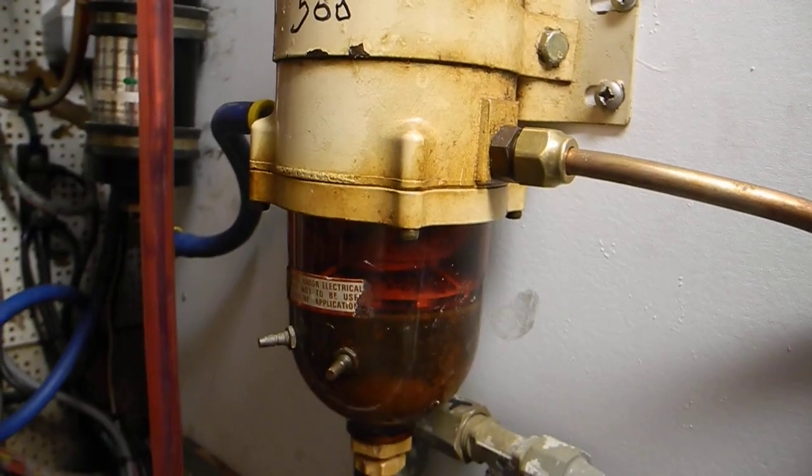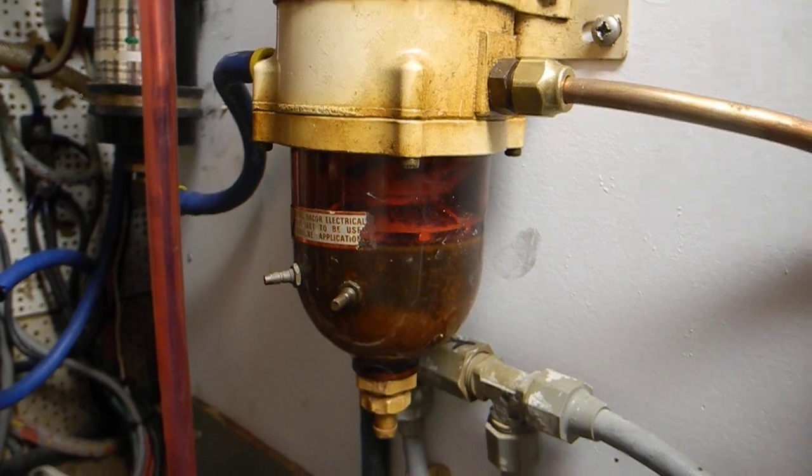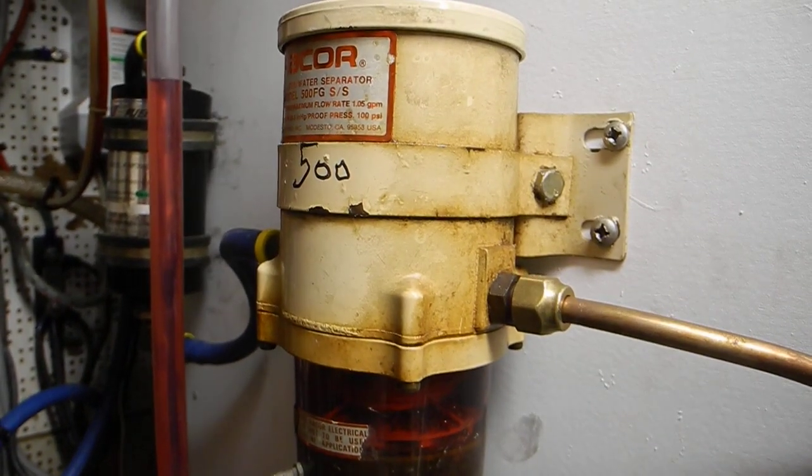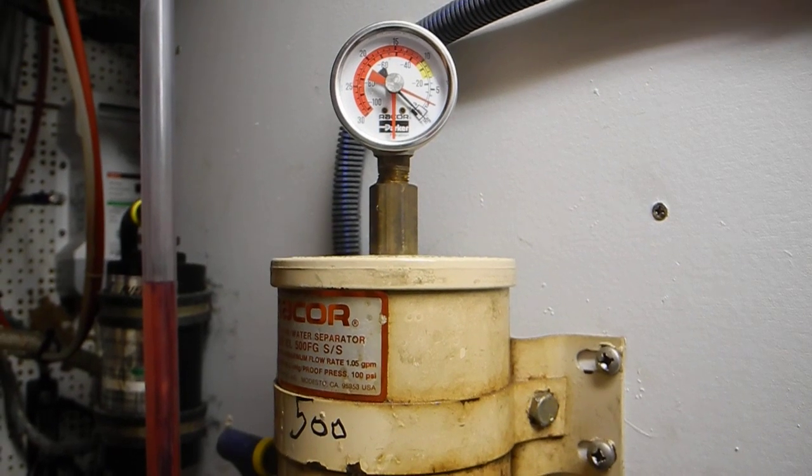So this is what a fuel filter and water separator can do for you. It separates the water, and then the filter gets all of the trash and the debris. And the vacuum gauge shows how dirty the filter is.